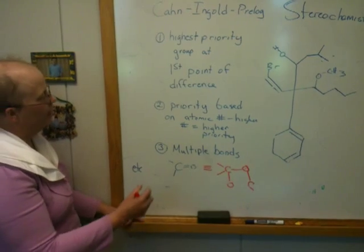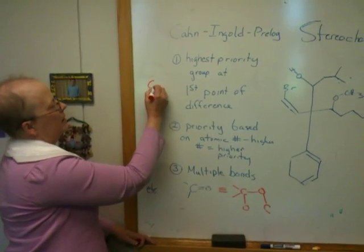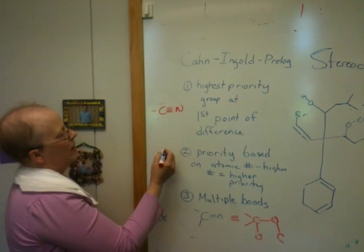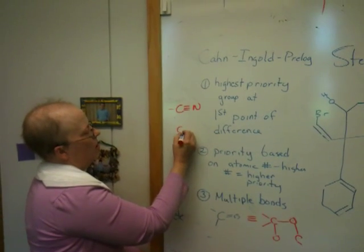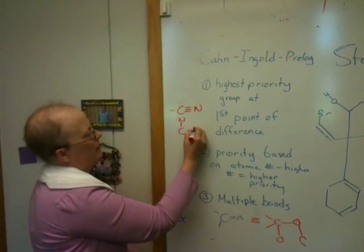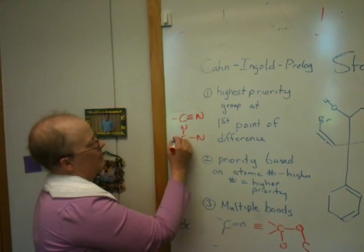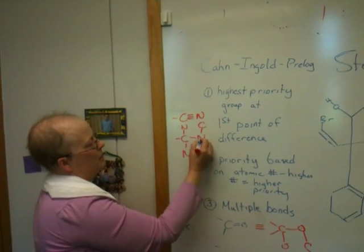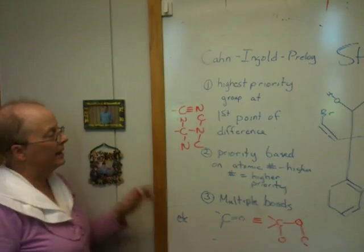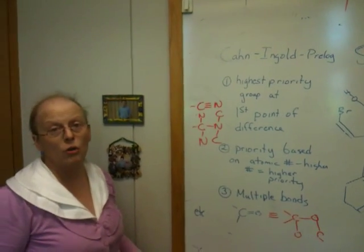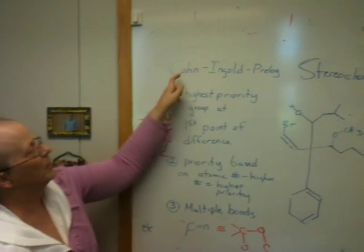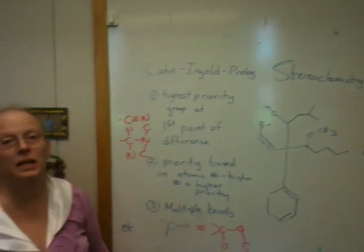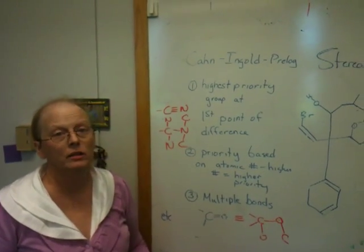Now, if you had a C triple bond N, this would be like the carbon is bonded to three nitrogens, and the nitrogen is bonded to three carbons. Again, do those atoms really exist? No. These are rules made up by three men named Cahn, Ingold, and Prelog. They just made it up, and it's totally arbitrary.